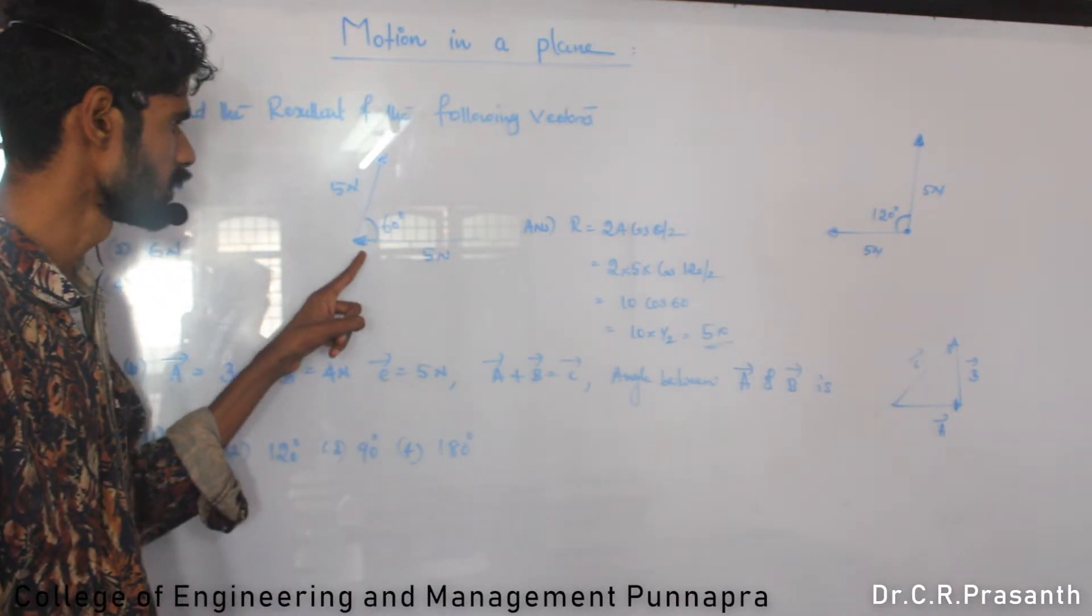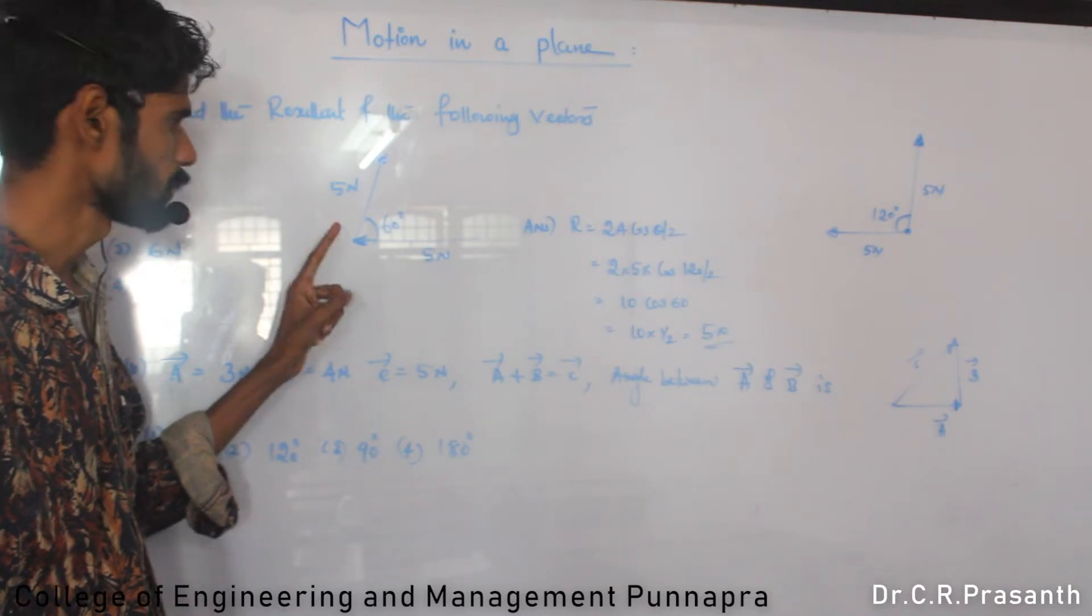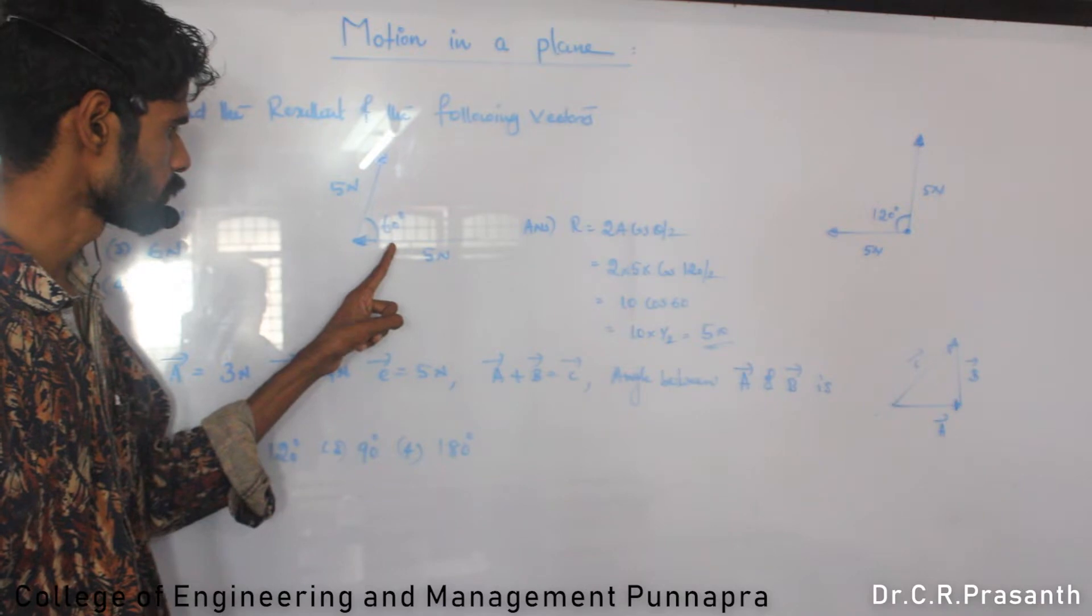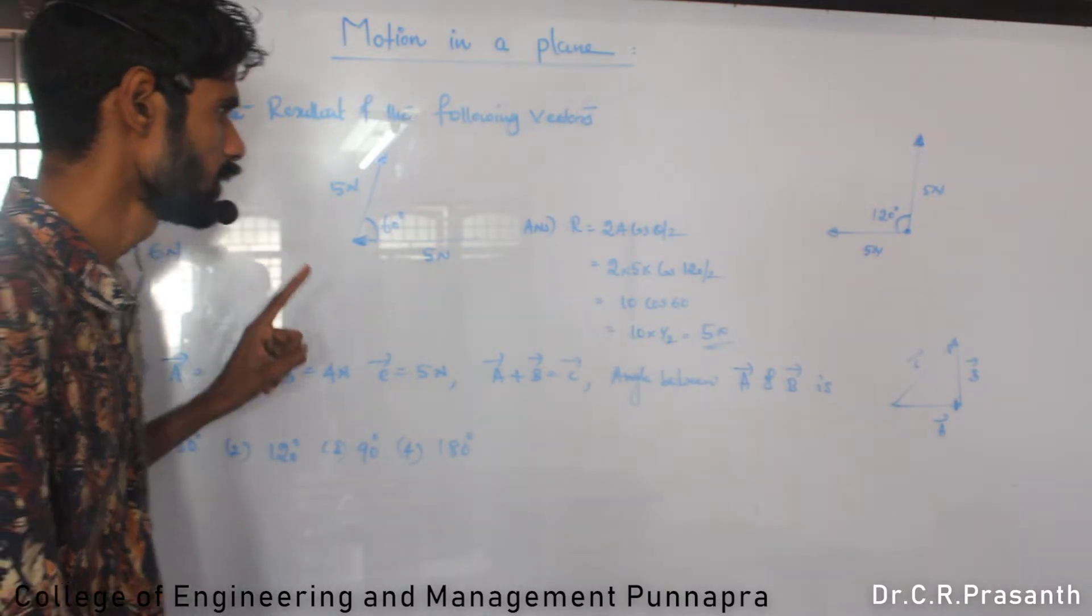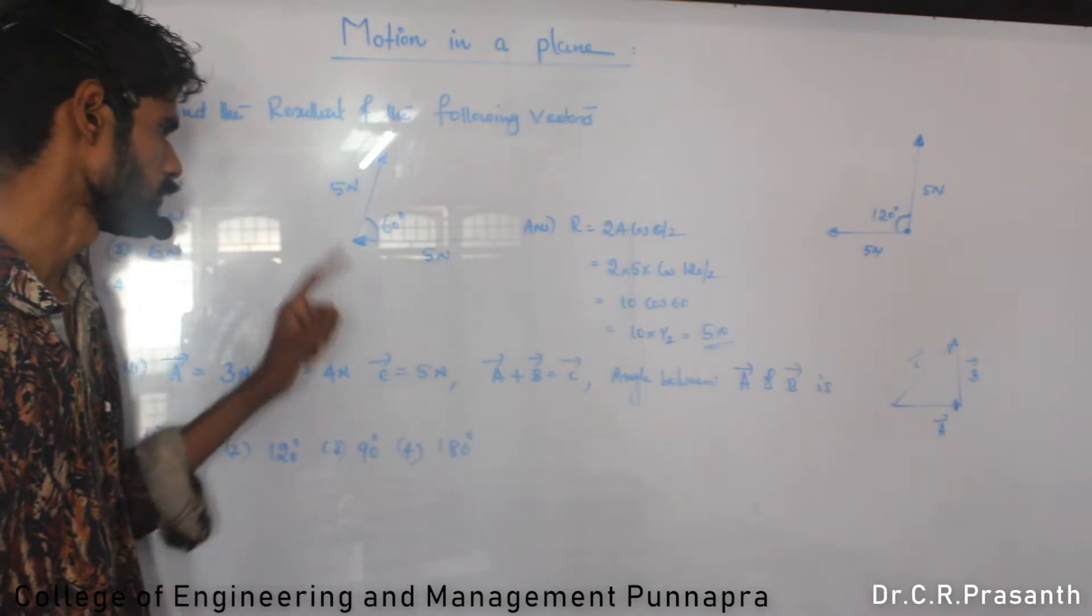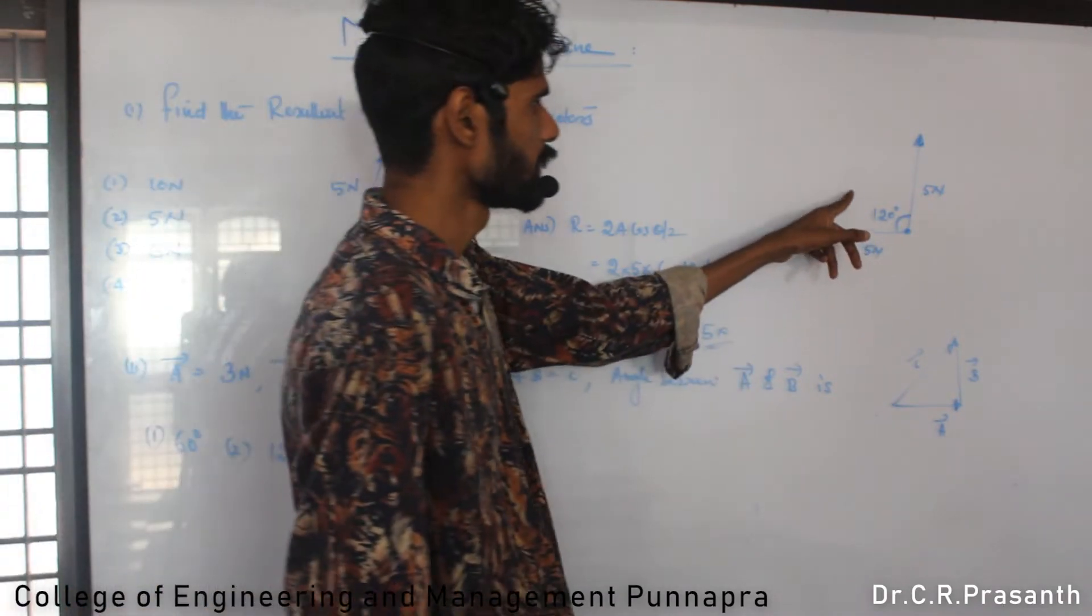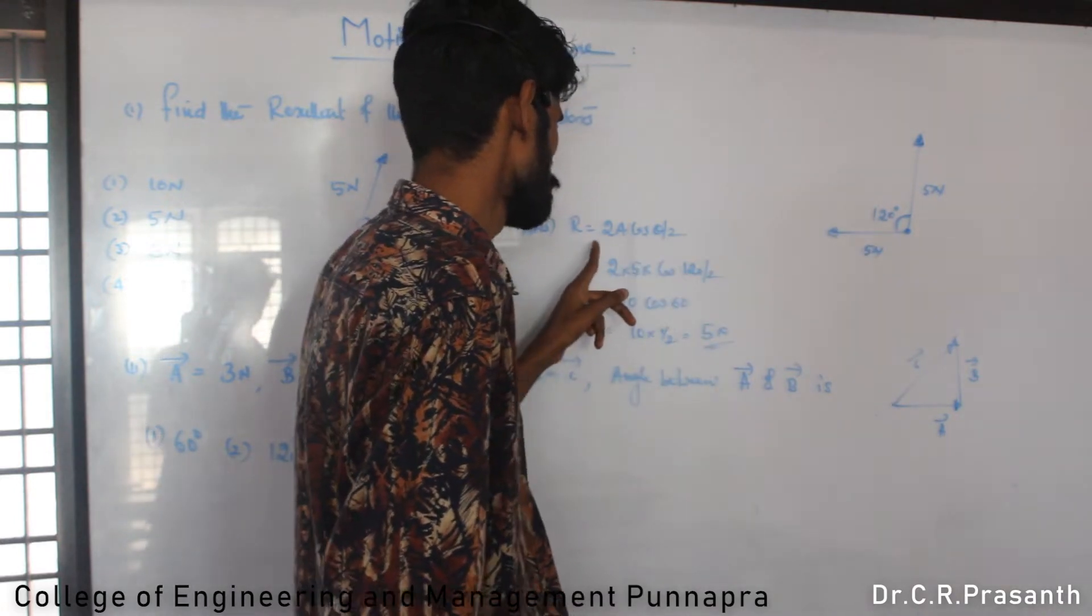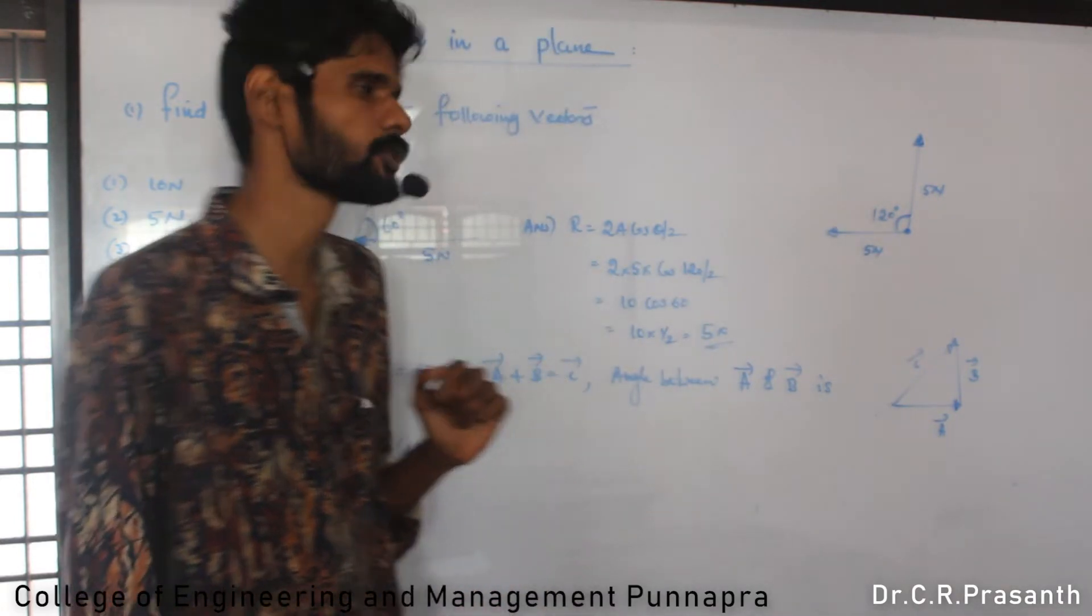160 degrees, 130 degrees. The resultant is 2A cos theta by 2, right?